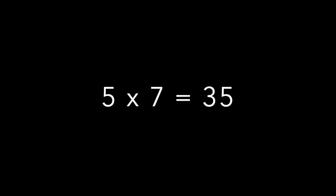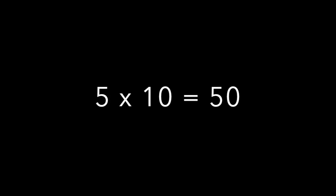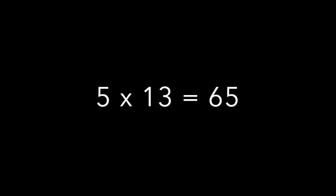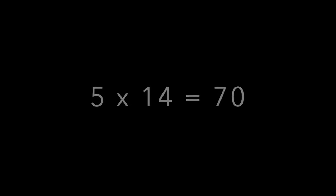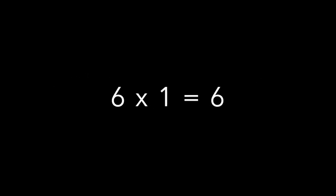5 times 7 is 35. 5 times 8 is 40. 5 times 9 is 45. 5 times 10 is 50. 5 times 11 is 55. 5 times 12 is 60. 5 times 13 is 65. 5 times 14 is 70. 5 times 15 is 75. Let's jump and do our 6s.